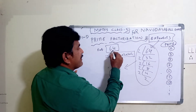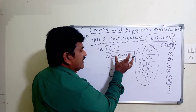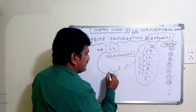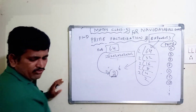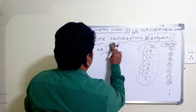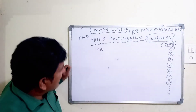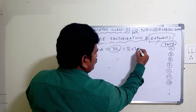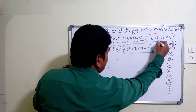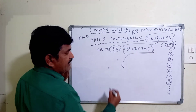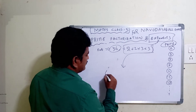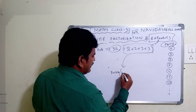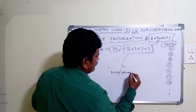Find the prime factorization form for 64: 2 × 2 × 2 × 2 × 2 × 2. The exponent form is 2 to the power of 6. Now I'll use the first question to explain the same concept. Prime factorization of 36 is 2 × 2 × 3 × 3. Simple.